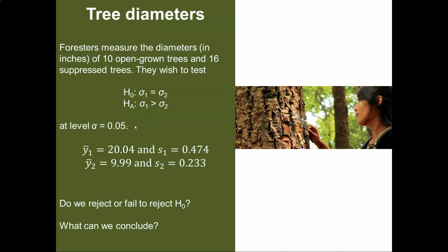We've got some data from our samples. Y bar sub one equals 20.04. That is, the mean diameter of open grown trees is 20.04 inches, and the standard deviation was 0.474 inches. For the suppressed trees, the mean diameter was 9.99 inches, and its standard deviation was 2.33 inches.